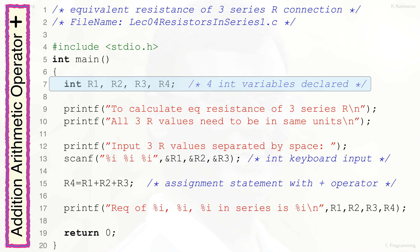This C program receives three resistances of the same units as input through the keyboard, calculates the equivalent resistance, and displays it on the monitor. In line 7, four integer variables are declared: R1, R2, R3, and R4. R1, R2, R3 are variables to store the input resistances. R4 is for storing the added-up value of the three input resistances. Note that variables of the same type can be declared in a single line separated by commas.